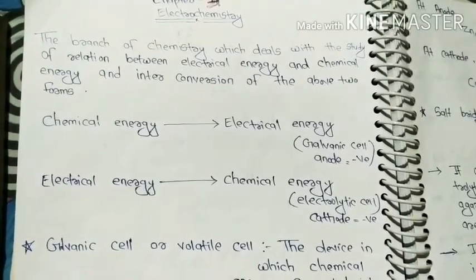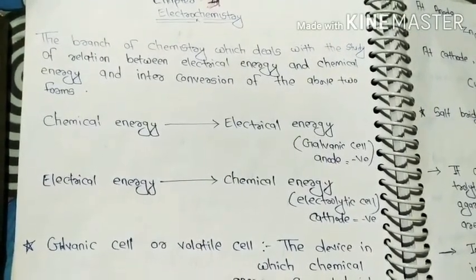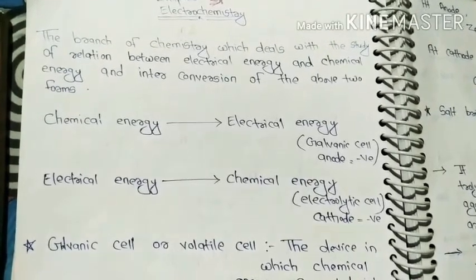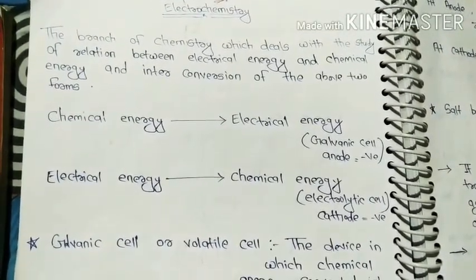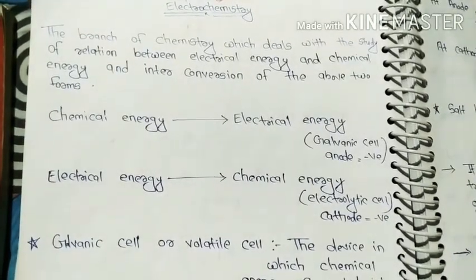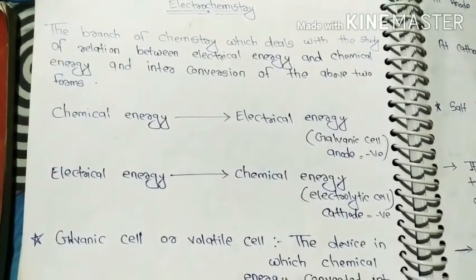This occurs in galvanic cell, and remember that galvanic cell cathode will be negative. Electrical energy to chemical energy, then it is an electrolytic cell. Remember that the cathode will be negative.